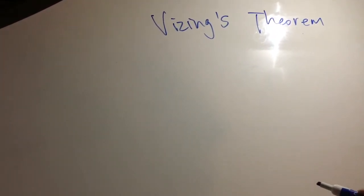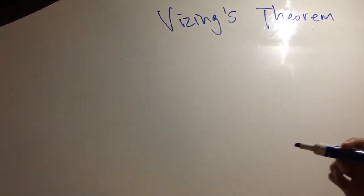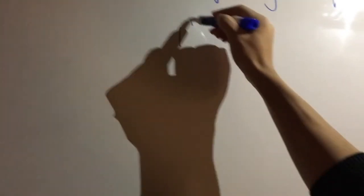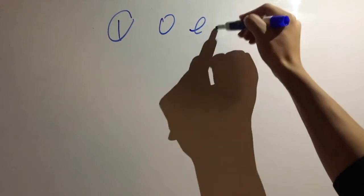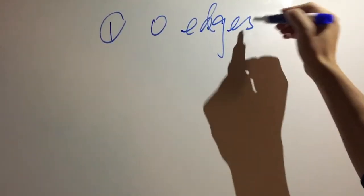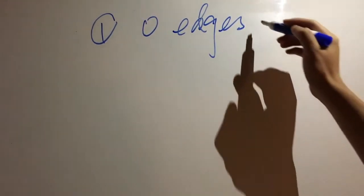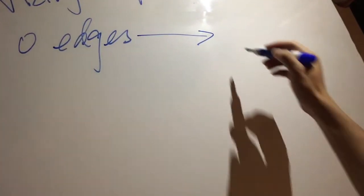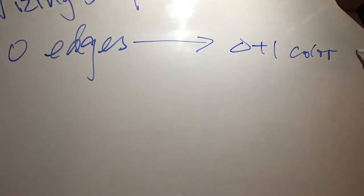We are thinking about using mathematical induction in the proof. We can categorize this problem into two conditions. The first is there are no edges in the simple graph, so in this condition we don't need delta plus one colors.